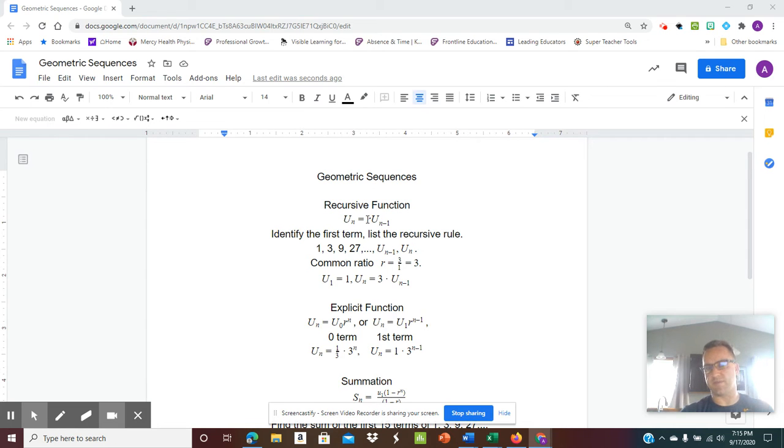So first, we'll start with the recursive function. The recursive function is just a rule on how to get from one value to the next value. So in general, this just looks like u sub n equals r, the common ratio, times u sub n minus 1.